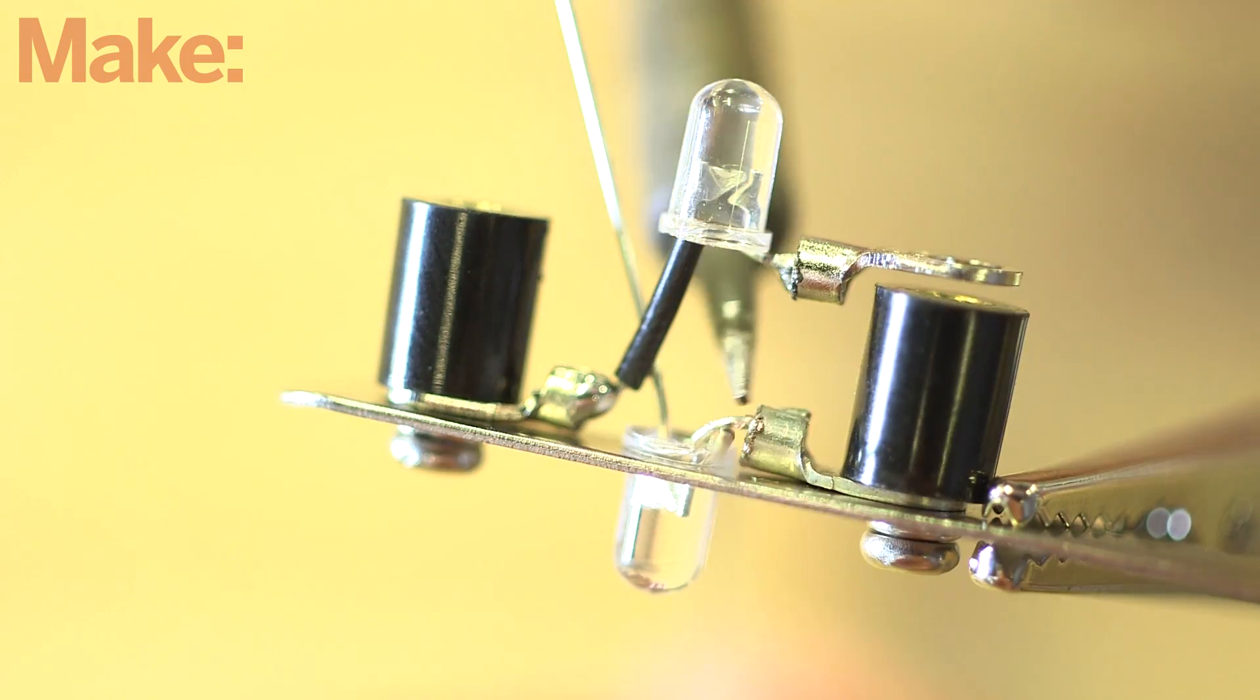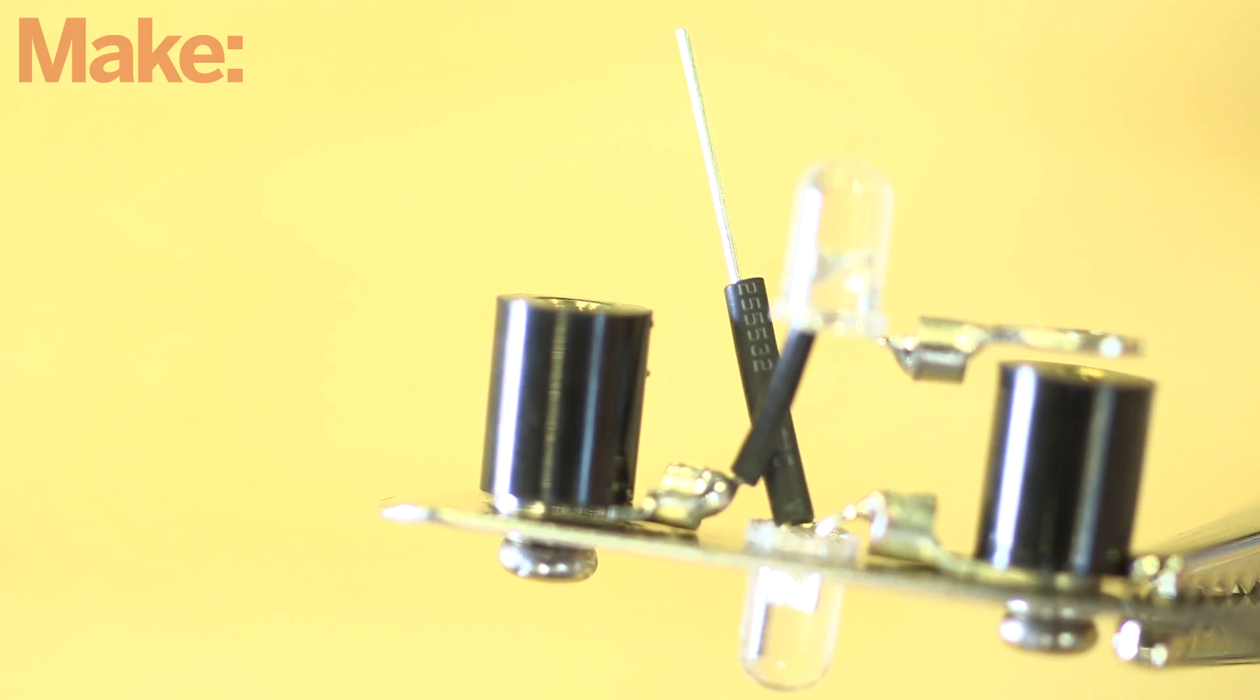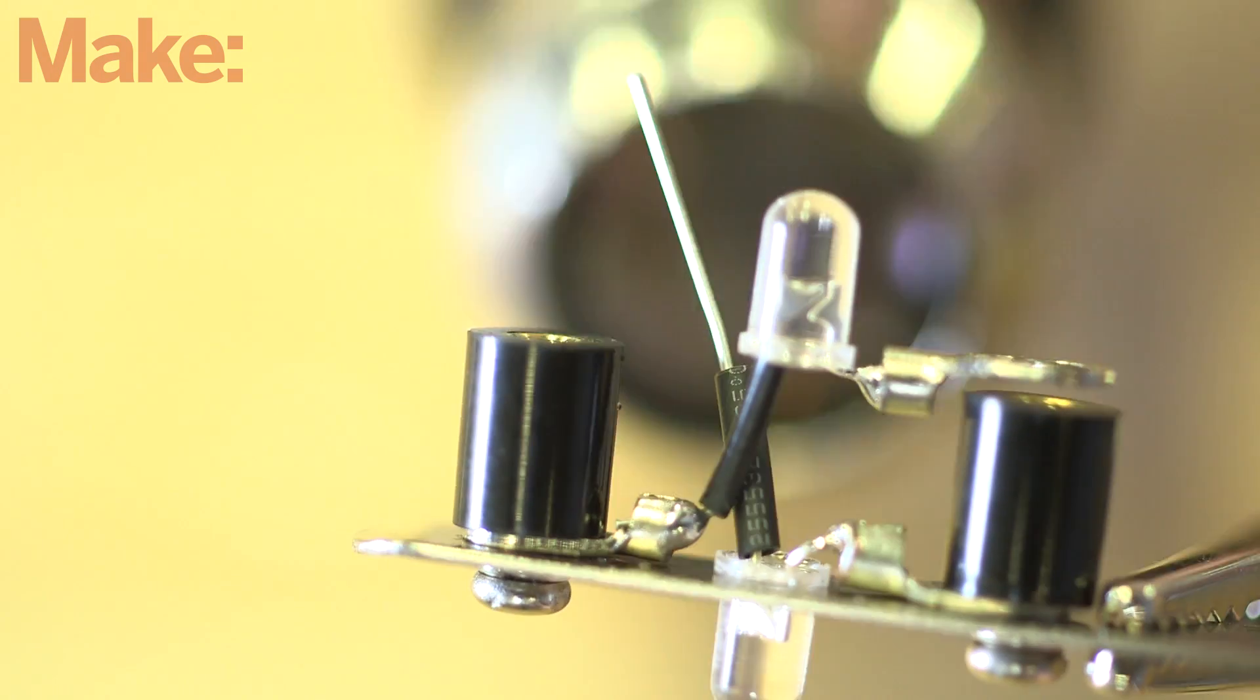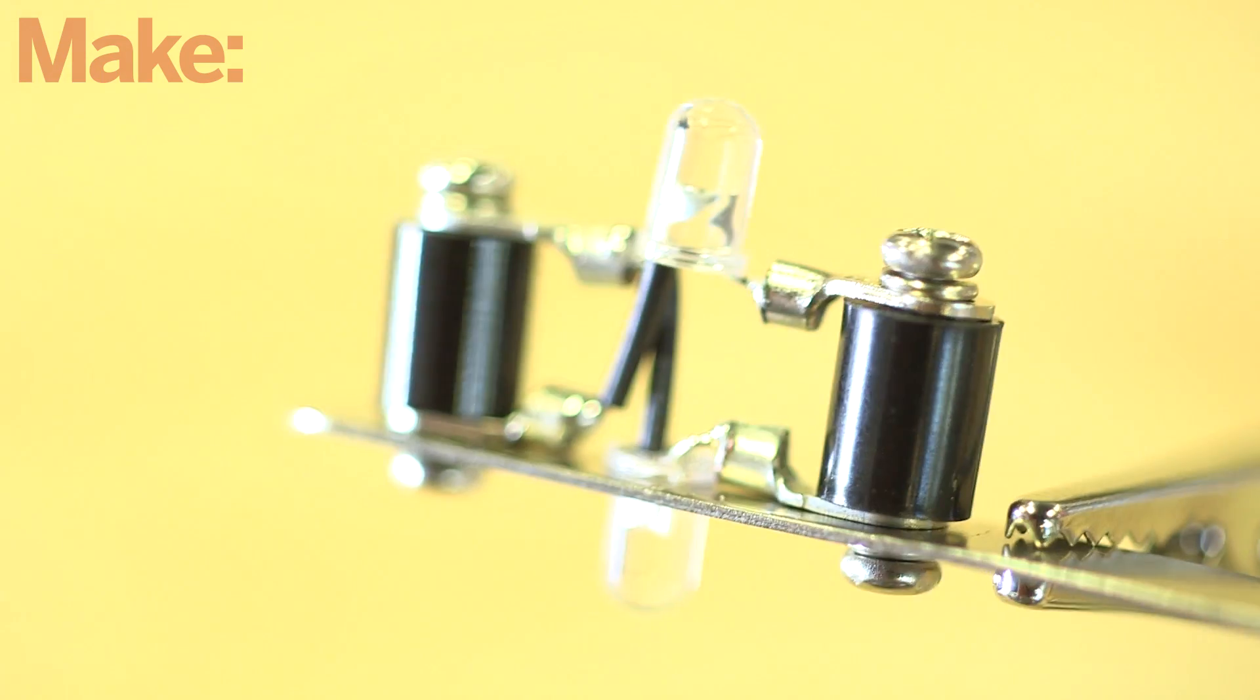Now mount the other jaw to the standoffs and then unmount the jaw with the LED already installed and set it aside. The second LED is installed the same way as the first, with the long lead connected to the closer jaw and the shorter lead soldered to the ring terminal attached to the opposite jaw.